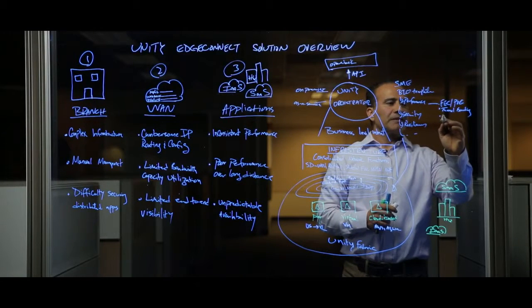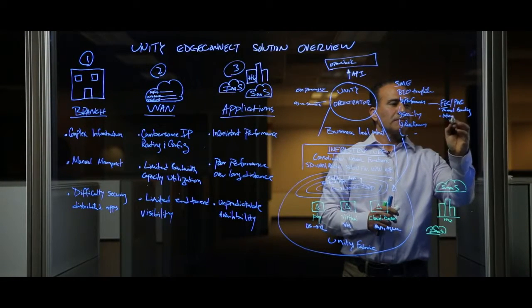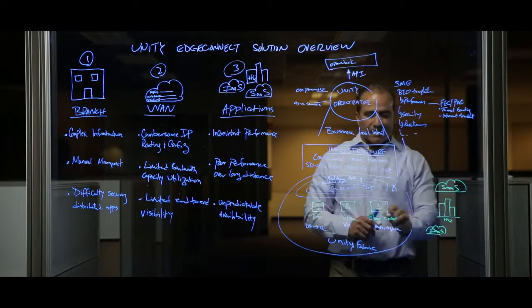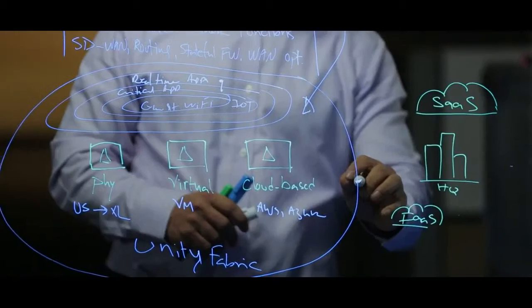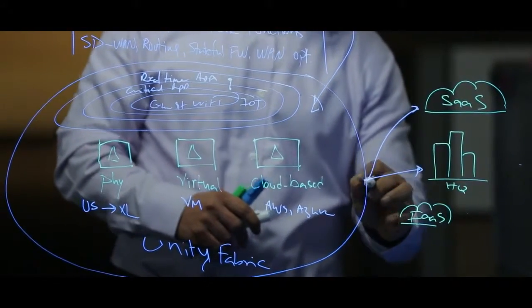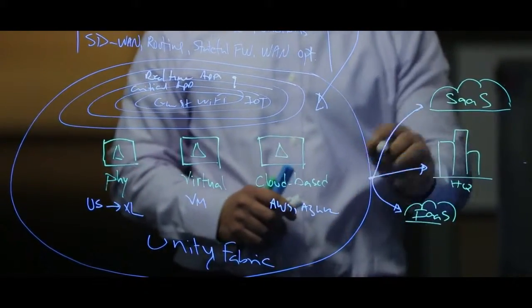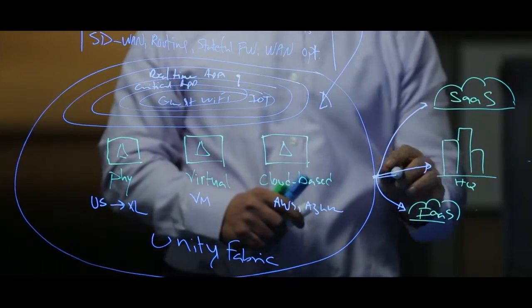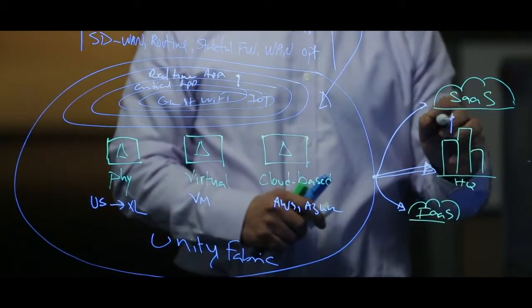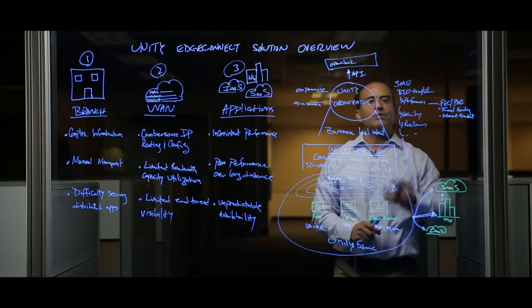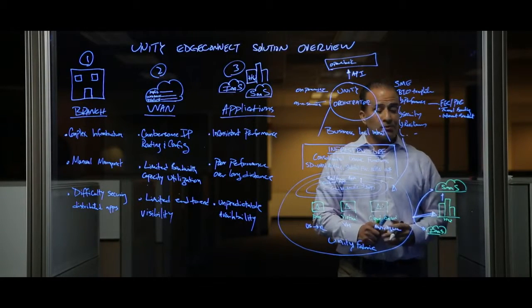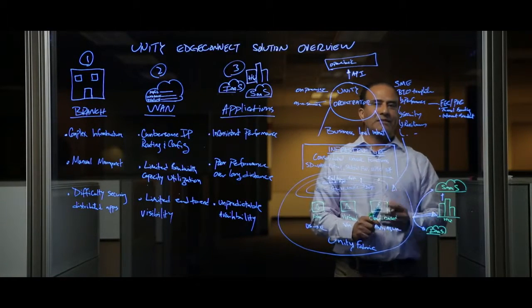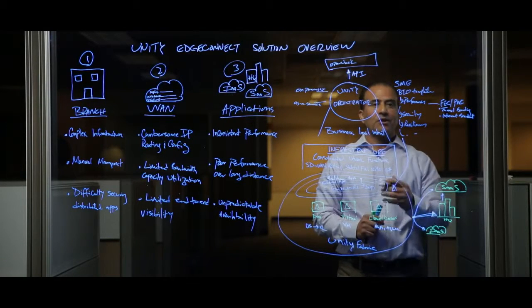The third component is Internet breakout. What we do with that is, as these branch offices try to reach these different applications, you want to be able to reach these applications in the most efficient way. For example, if I want to reach my SaaS application, I don't want to backhaul to my headquarter and then reach to the SaaS. So with Internet breakout, we have a feature or capability called first packet IQ. So now I'm able to classify applications on the first packet and send that dynamically and intelligently on an app-by-app basis to its destination.